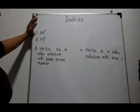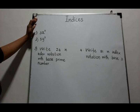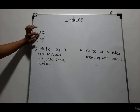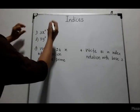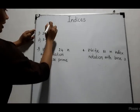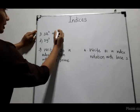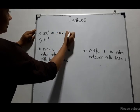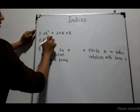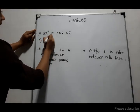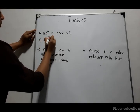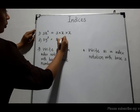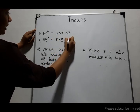Let us recall what was learned in grade 7 about indices. Here you are given a product. Let's see how to expand this: 3x² can be expanded as 3 into x into x. As well as when we consider 5y³, we expand it as 5 into y into y into y.